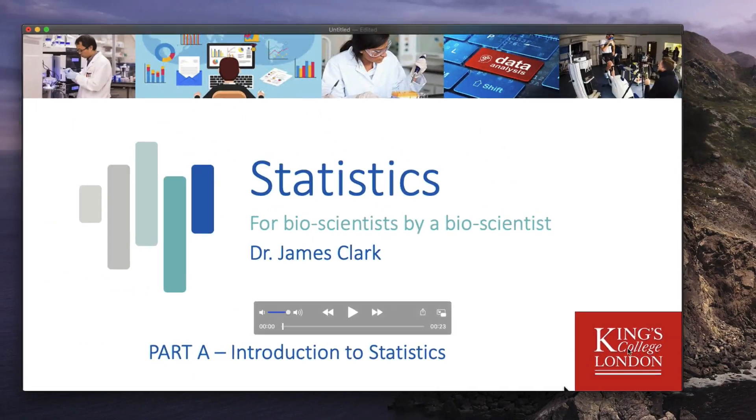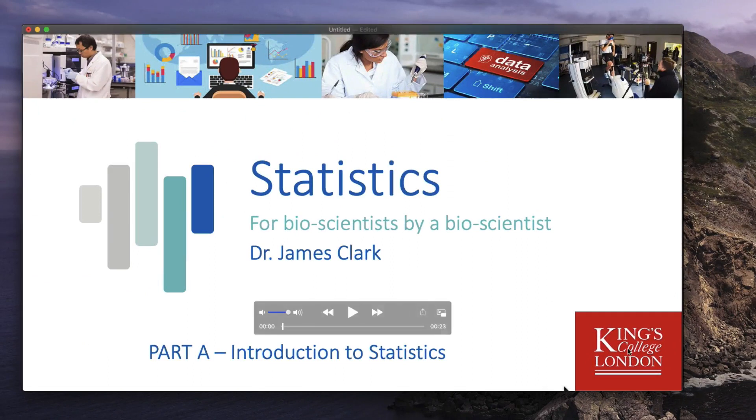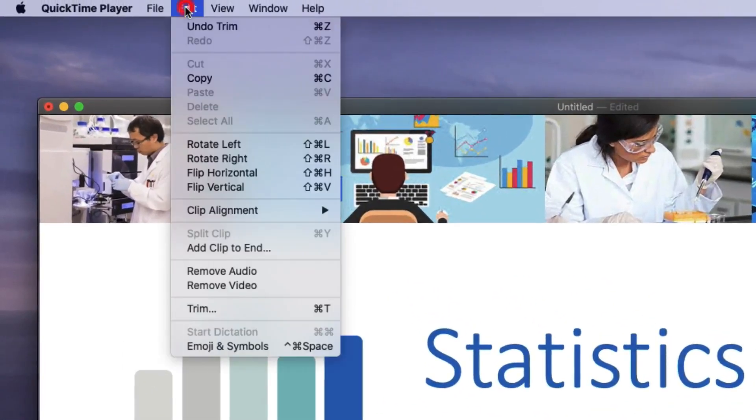Should you wish to trim off a middle section of this video you will need to duplicate the video, trim the start off one and the end of the other, and then join the two videos together which you can also do in QuickTime. In the Edit menu you can add clip to end so you trim the first half of your video down and then you add the second half to the end and it'll seamlessly join the two videos up.